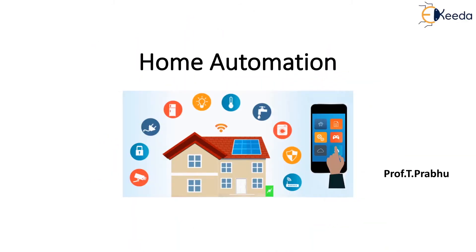Home automation is the automatic control of electronic devices in your home. These devices are connected to the internet, which allows them to be controlled remotely. Home automation can also lead to greater safety with IoT devices like security cameras and systems. A home automation system will control lighting, climate, entertainment systems and appliances, and may also include home security such as access control and alarm systems.